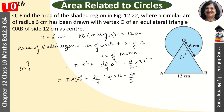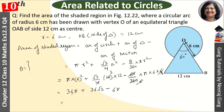So, 60 upon 360 into pi, which gives us 6 pi. This becomes 36 pi plus root 3 upon 4 into 36 root 3, minus 6 pi. So, 36 pi minus 6 pi means 30 pi, plus 36 root 3.